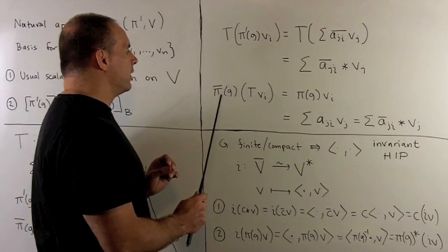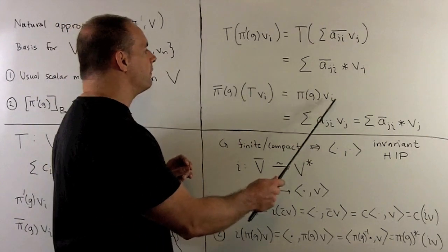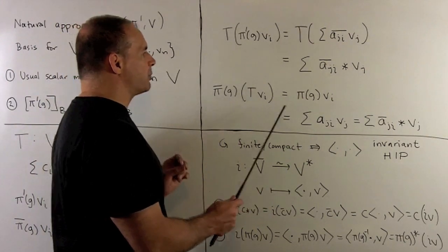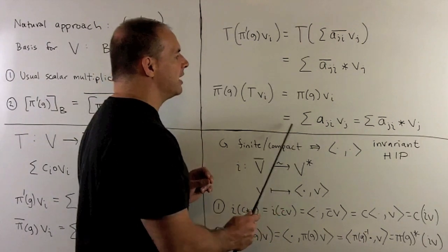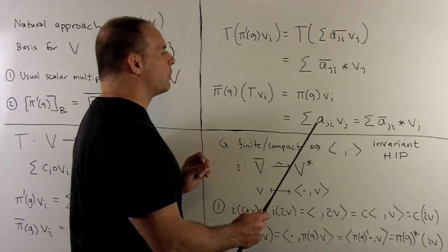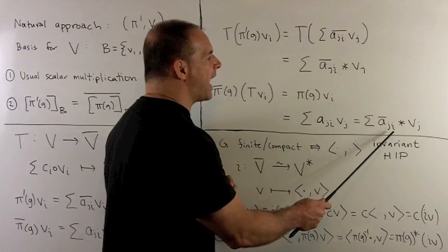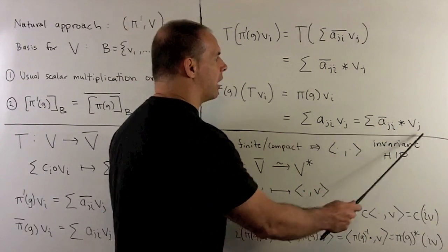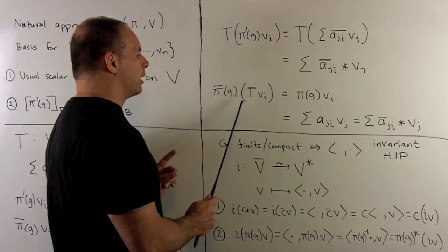If I apply T to VI, and then apply pi bar of G, well, VI goes to itself. Pi bar of G just acts by pi of G. We'll just have A sub J i V j, sum. Then, since I'm working in V bar, we can pull this out as A bar J i star V j, sum. We see that these are equal, and so we have the intertwining property.